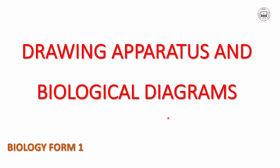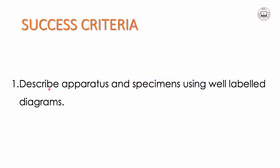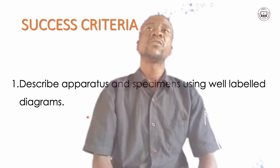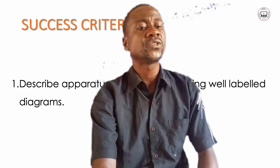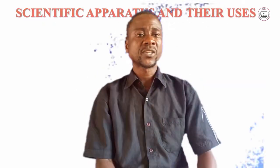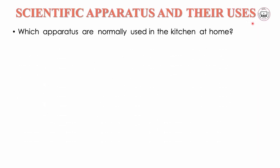We want to discuss drawings and biological diagrams. By the end of this lesson, you should be able to describe apparatus and specimens using well-labeled diagrams. These apparatus are called scientific apparatus because they are used in a science subject. We will discuss these apparatus and their uses.